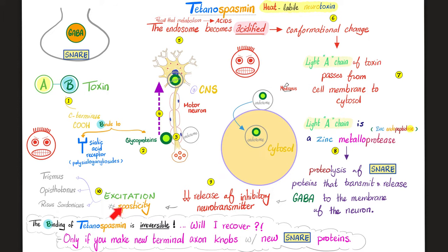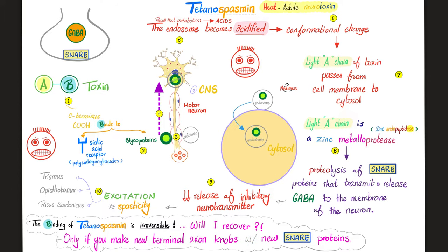Too much excitation causes spasms: spasms of your jaw, called trismus; spasms of your facial muscles causing the sardonic smile, risus sardonicus; and hyperextension of your back, opisthotonus. Don't forget that the binding of tetanospasmin to your neurons is irreversible. The only chance of recovery is if you make brand new terminal axon knobs with brand new SNARE proteins that have not been inhibited by tetanospasmin.